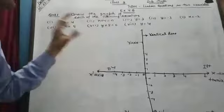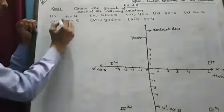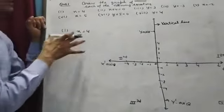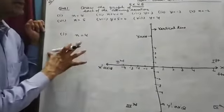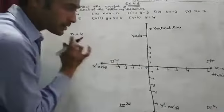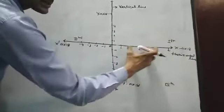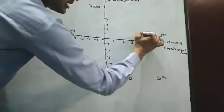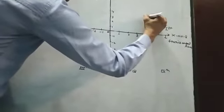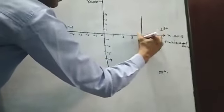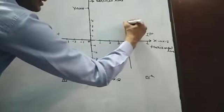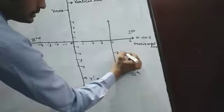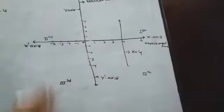So on this side, x is 4, 4 is this point. So this is the graph for equation x is 4, and this is parallel to the y-axis.